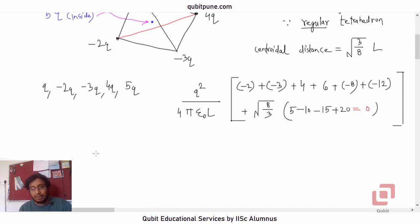Let us add the positive numbers first. 4 and 6 is 10. Let us add the negative numbers now. 12 and 8 is 20. 20 plus 3 is 23. 23 plus 2 is 25. So, that is 10 minus 25. That negative 15 has to be the coefficient of Q squared upon four pi epsilon naught L.